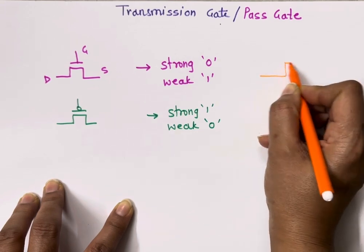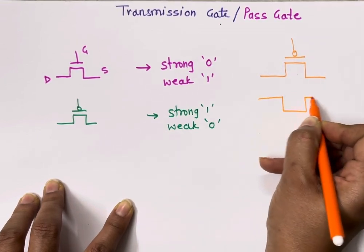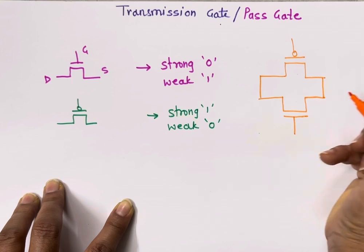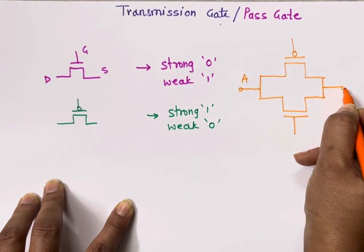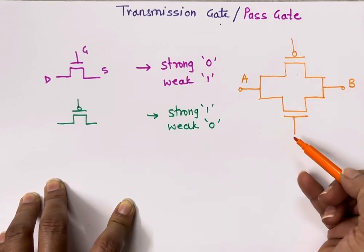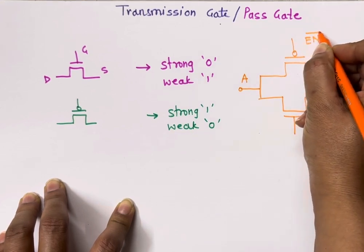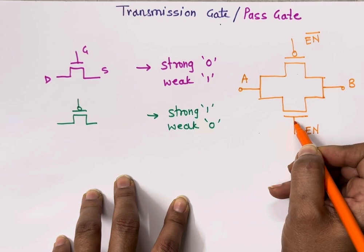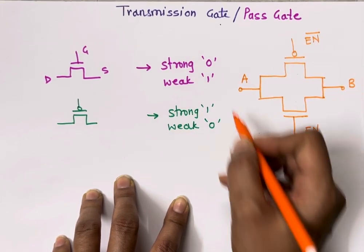This is the transmission gate. This is my P-channel MOSFET and this is my N-channel MOSFET. The drain and source terminals are connected, and here we can apply input and here we get the output. Here we connect the enable pin and here we connect enable-bar. The N-channel MOSFET turns on only when it receives a one at the gate terminal, whereas the P-channel MOSFET turns on when it receives a zero.